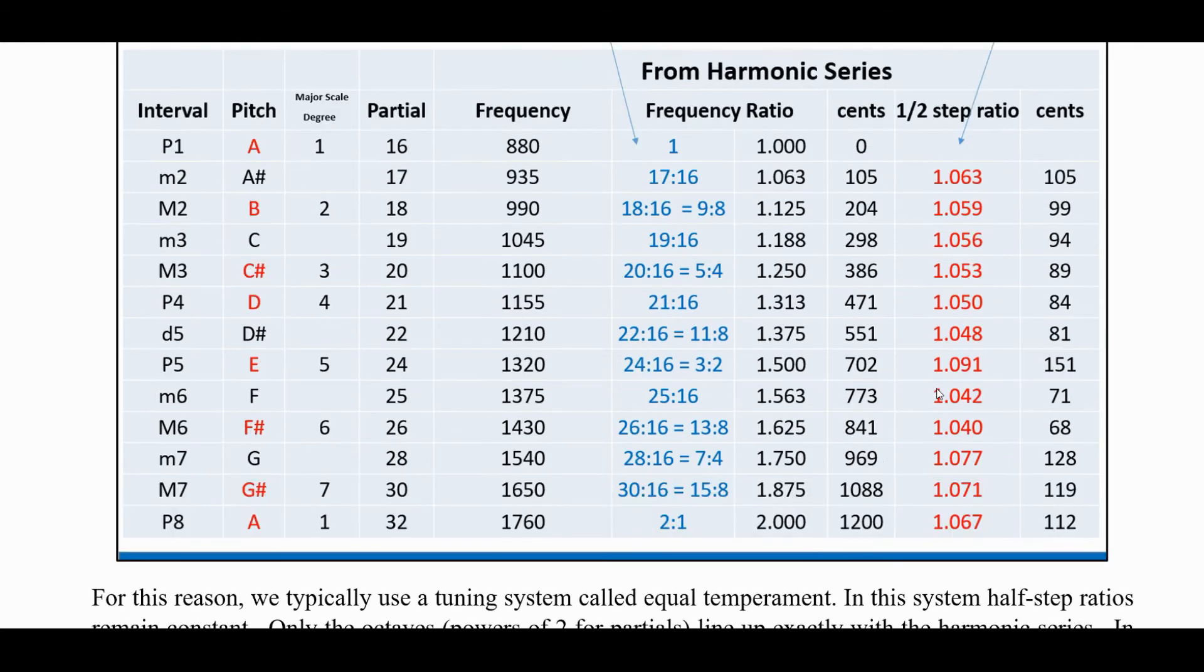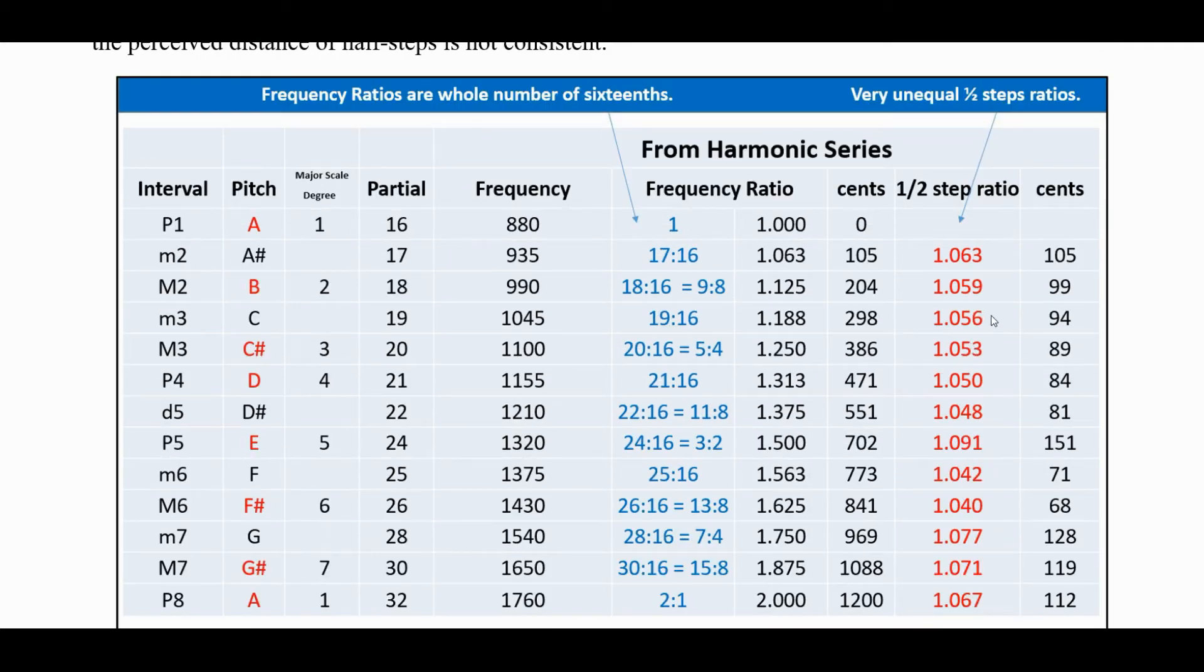And these ratios here are not all the same. So it's the perceived ratio that you hear as the difference in pitch. And because these are very uneven, we don't typically use this for our music. But it will make the best chords. If you actually line these all up, it will make the most consonant chords if you actually tune them according to the harmonic series.